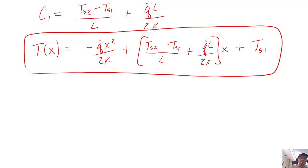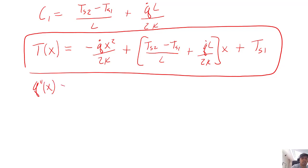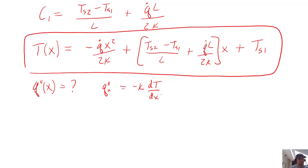You can see we have an x-squared term, so the temperature profile depends on x squared, as well as x, and has a constant intercept. Now if we want to find the flux profile, we apply Fourier's law. The flux in the x direction equals minus k times dT/dx. Since there's no temperature variation in the y or z direction, we're just dealing with this one dimension. We know the temperature profile, so we can simply differentiate it.